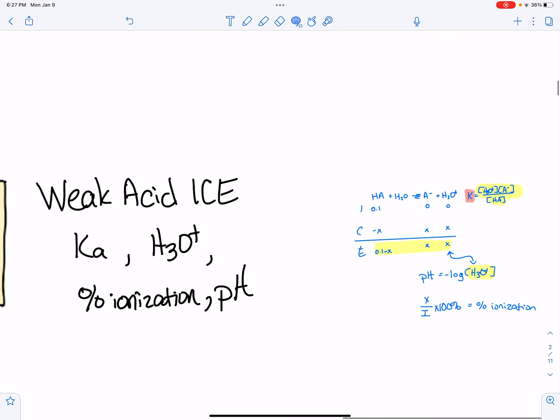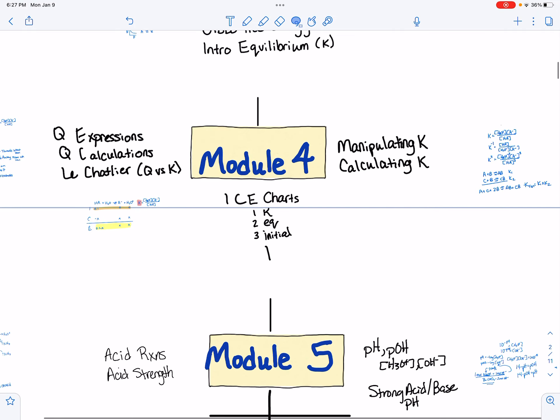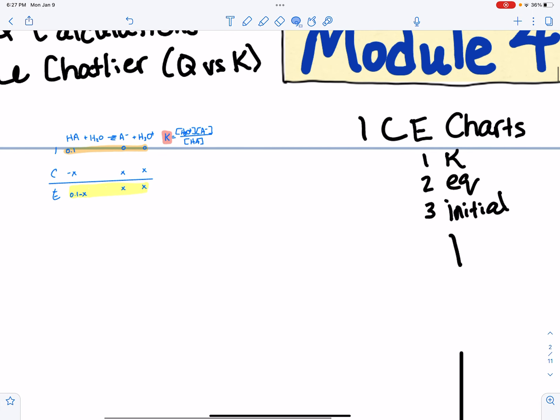So right here, weak acid ice. So this is the same ice chart right here, that whole ice chart. It's the same ice chart as what you learned about up here in module 4. It's that same ice chart over there.